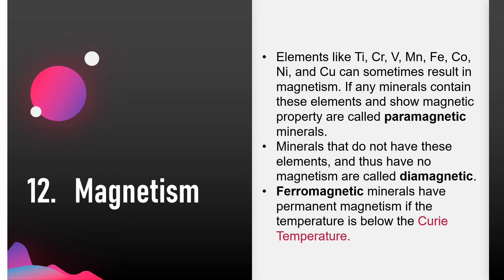Magnetic minerals result from properties specific to certain elements — titanium, chromium, vanadium, manganese, iron, cobalt, nickel and copper can sometimes result in magnetism. Minerals that contain these elements and show magnetic properties are called paramagnetic minerals. Paramagnetic minerals only show magnetic properties when subjected to an external magnetic field; when the field is removed, they have no magnetism. Minerals that do not have these elements and thus have no magnetism are called diamagnetic. Ferromagnetic minerals have permanent magnetism if the temperature is below the Curie temperature.